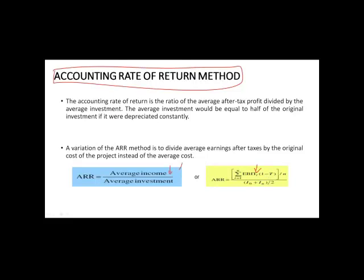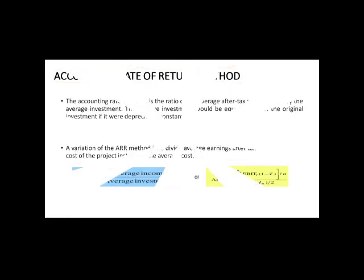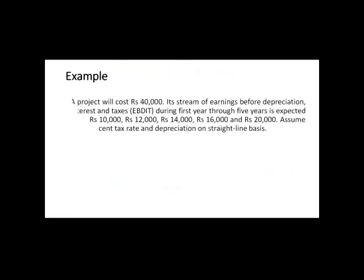This average income divided by your average investment is the accounting rate of return. This method is simple but has a flaw - it is taking only the amount that is given in the accounting period.